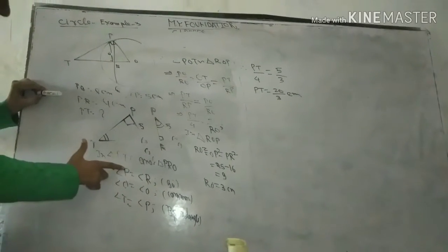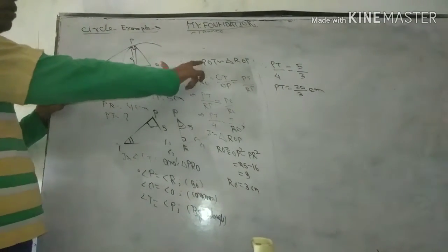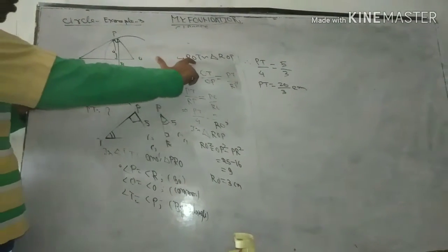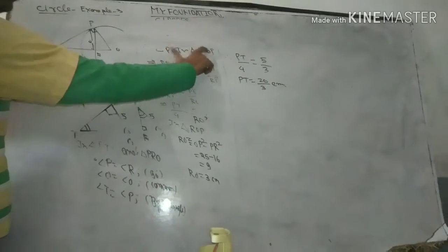So these are similar triangles. We have triangle POT and ROP similar. So PO upon RO, OT upon OP, and PT upon RP.